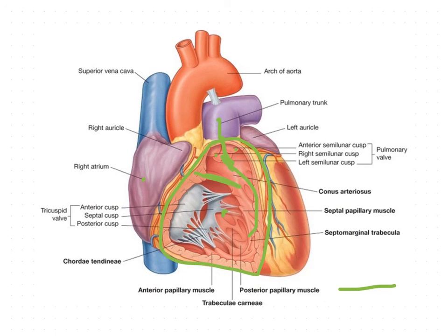The wall of the right ventricle is thinner than that of the left ventricle in a ratio of 1:3 — approximately one centimeter thickness for the right ventricle versus three centimeters for the left ventricle. In the next session, we are going to see the left ventricle. Thank you.